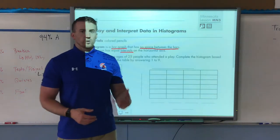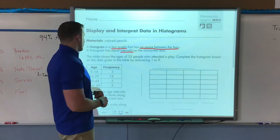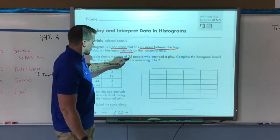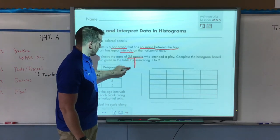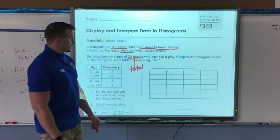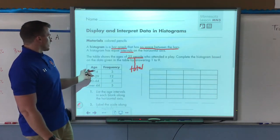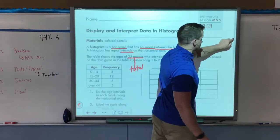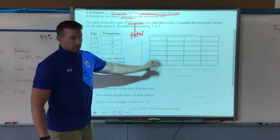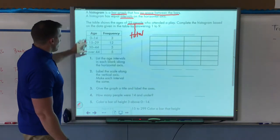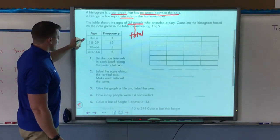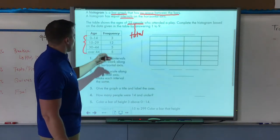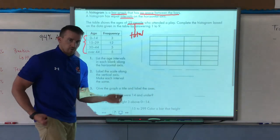With this first example we're going to be creating a histogram from a table of values. The table below shows the ages of 25 people who attended a play. We're going to complete the histogram based on the data given in the table. All the ages are already in intervals: 0 to 14, 15 to 29, 30 to 44, and then 44 and older.